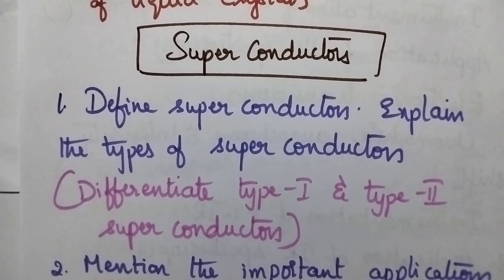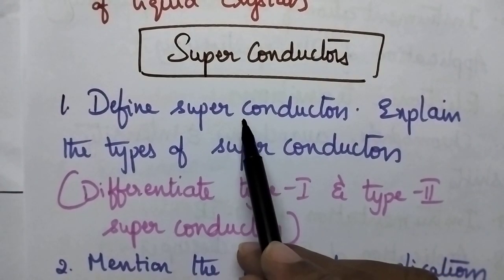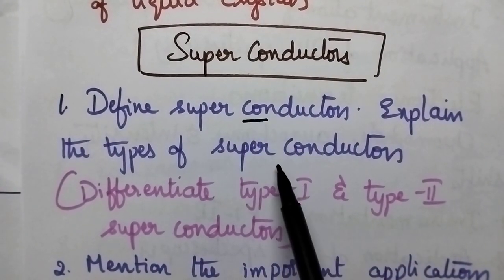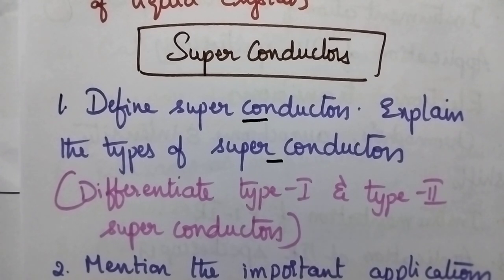Moving to superconductors, it includes definition of superconductor, types of superconductors especially the major differences between type 1 and type 2 superconductors, along with applications of superconductors.